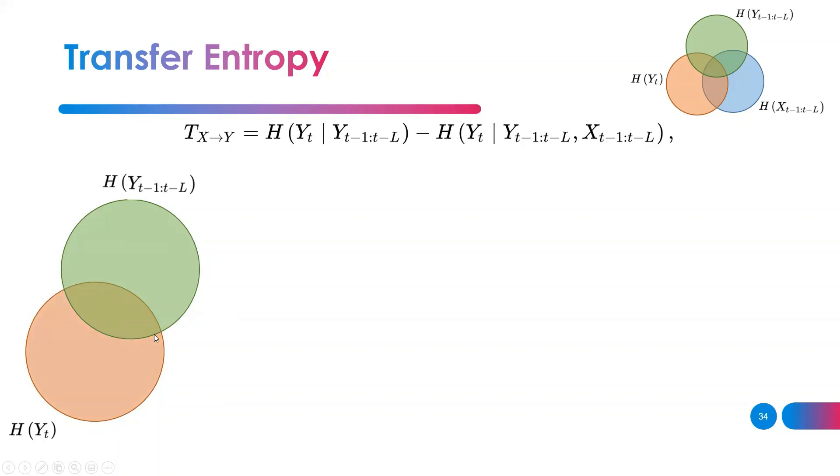The remaining of the orange circle after knowing the past values, the green, will be this portion I mark for you in blue. This represents the blue region, the first term which is the remaining uncertainty about H(Y) after knowing its past values. It's a lovely moon shape.